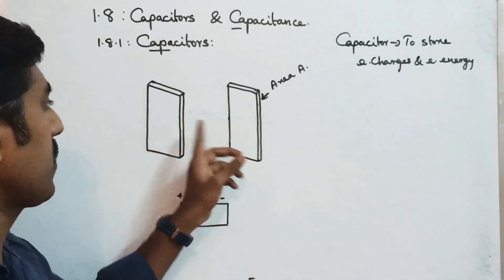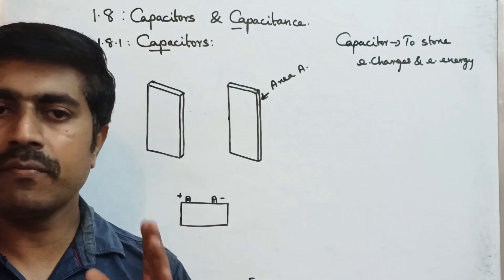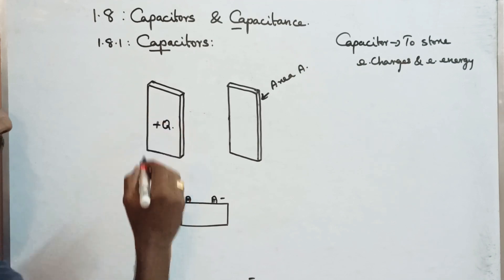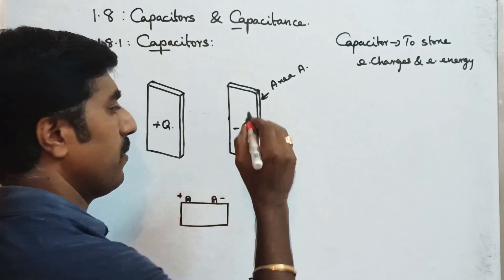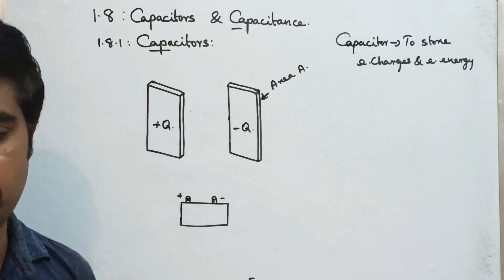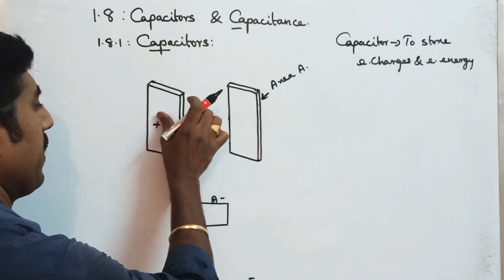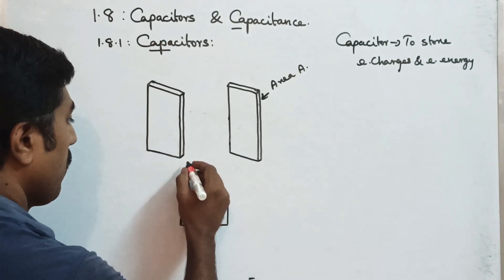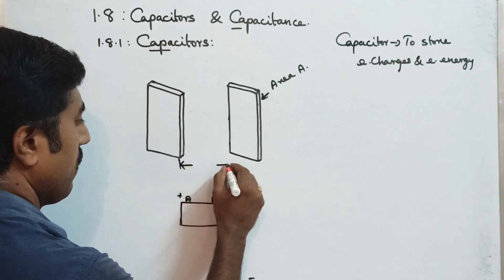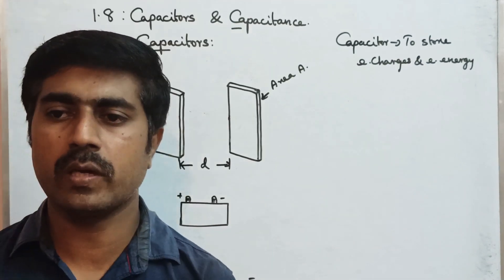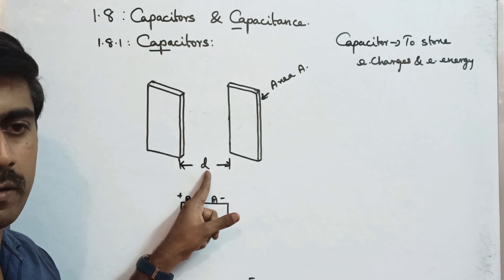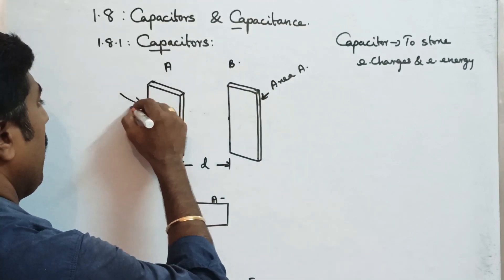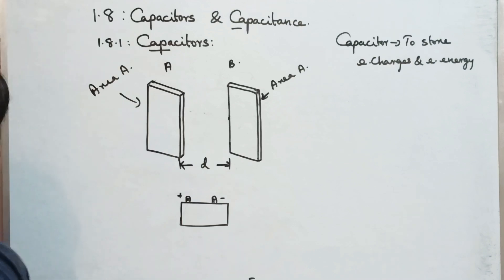Both metal plates maintain the same area - length, breadth, height. One plate maintains positive charge plus Q, and the second plate maintains negative charge. So first, take two metal plates or two metal sheets, placed parallel, separated by a distance denoted by the letter D. Plate one is A and another plate is B.